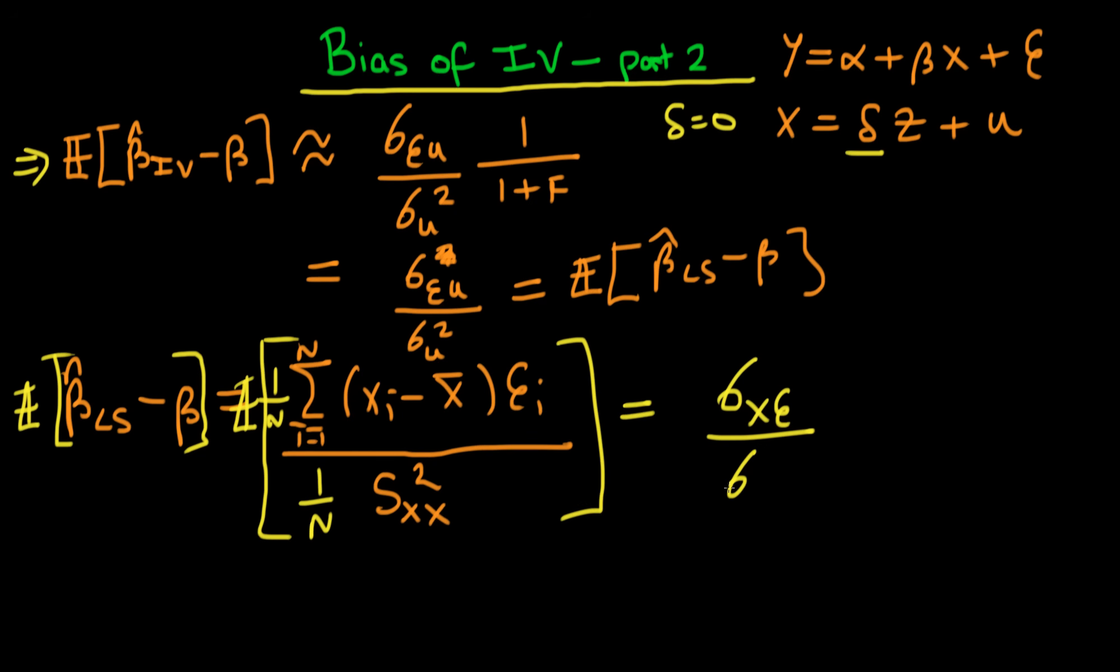So that's the bias of our least squares estimator in the event that delta equals zero. All the variance in x is coming through this u term because we can forget about the delta z term, so our denominator really is just sigma_squared_u. In the circumstance where delta equals zero, all the covariance between x and epsilon is coming from the covariance of u with epsilon, so I can replace the numerator by sigma_u_epsilon, which is exactly the same as we found here.